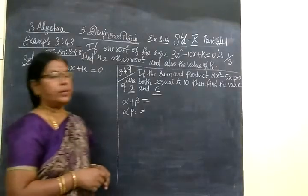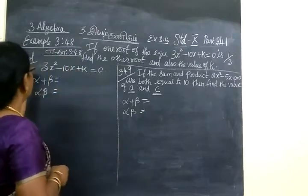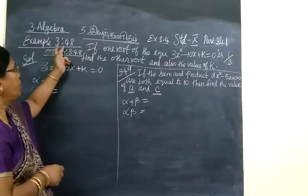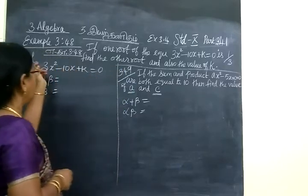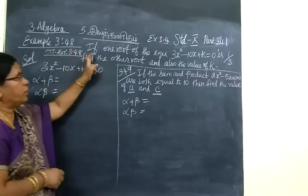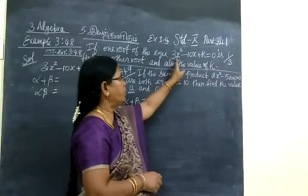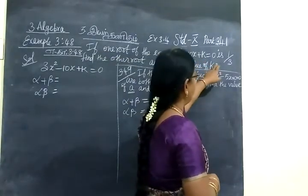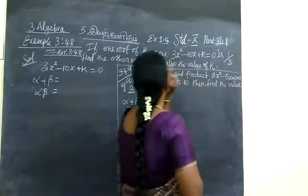Now we see Part 341. Example sum — Examples 3.48 and 3.49. In 3.48, if one root of the equation 3x² minus 10x plus k equals 0 is 1/3,